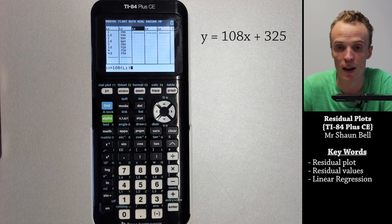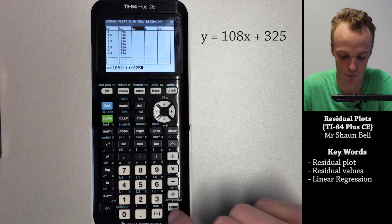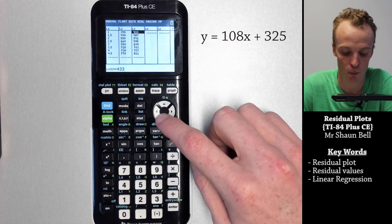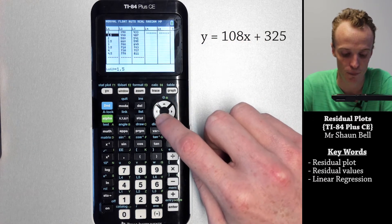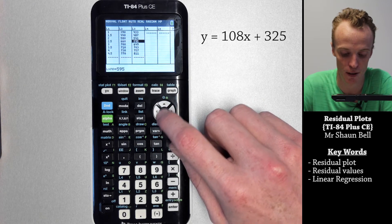Then I need to add 325, so plus 325. When I hit enter that will automatically create a list where it substituted this x value into list three.